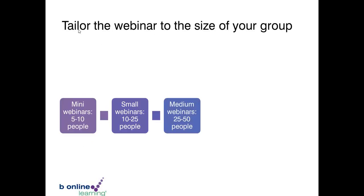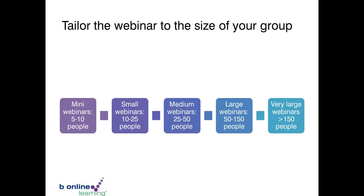With medium groups you can still have interactivity, but when you start getting to pretty large numbers, interactivity really declines and it becomes more like a presentation or demonstration. The smallest or tiny size is really like an online conversation — you can brainstorm, chat, and it's easier to control as the facilitator. Once you start getting into higher numbers it can be quite difficult to manage; with 150 people I'd probably need somebody to help me with the chat. The size of your group will ultimately dictate what you can do.